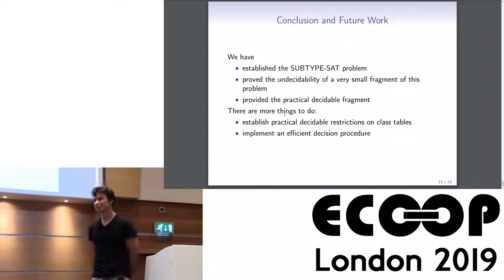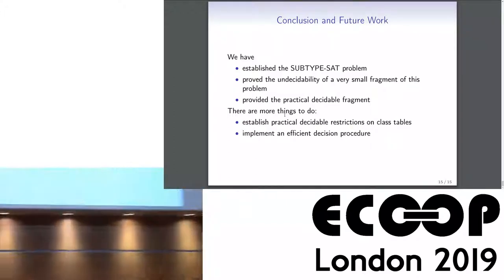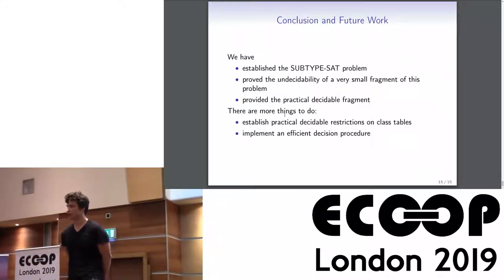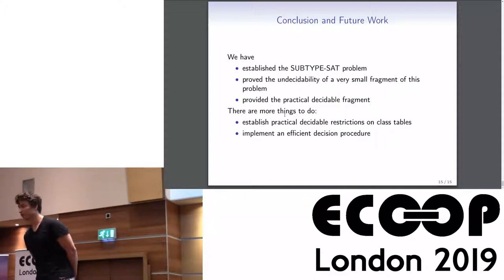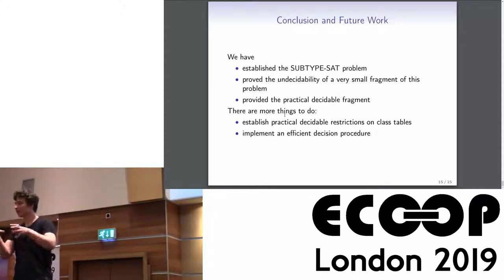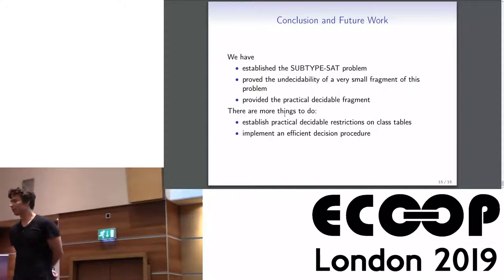Q: Did you come across queries in your work that were not semi-ground — needing something like X smaller than Y? A: Yes, we encountered such examples in System.Linq in the standard .NET library. We could potentially add more constraints on the class tables, and those fragments fall within such constraints, but we have not yet determined those constraints or proved decidability in that setting.